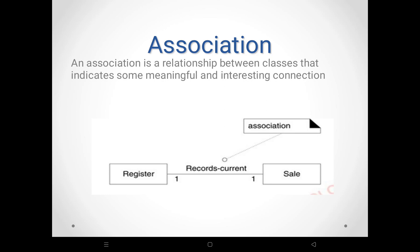What do you mean by association? We already discussed the association concept in class diagram — it is one of the very important elements. Association is a relationship between classes, or the connection between two classes. For example, Register and Sale are two classes. Register records the current sale, so every sale is recorded in a register. This connection between the classes is called association.